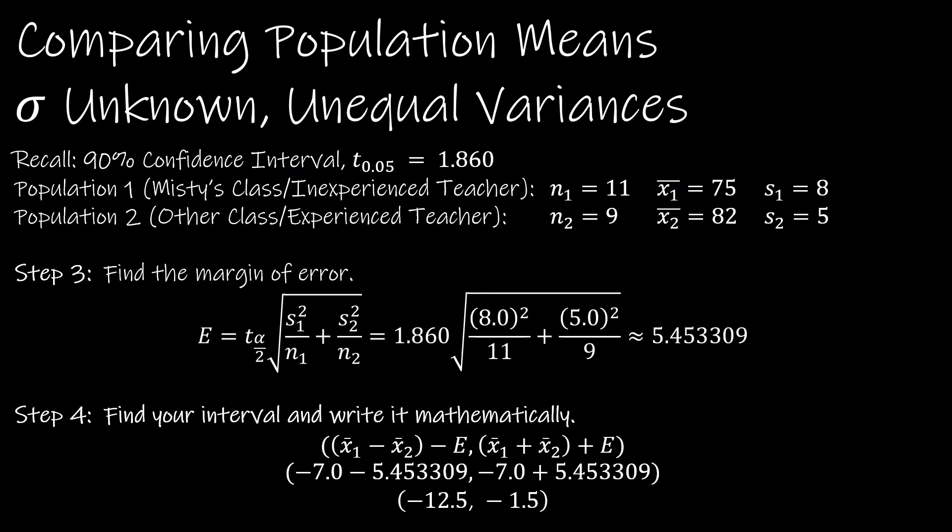Step 3, we're to find the margin of error. So we're going to use the 1.860 that we just found, and we're going to use the standard deviation squared divided by the sample size and the standard deviation squared divided by the sample size. Let your calculator or Excel do all of that calculation for you. Don't find parts and then round parts and then use rounded parts to create new parts. You should end up with this value for your margin of error.